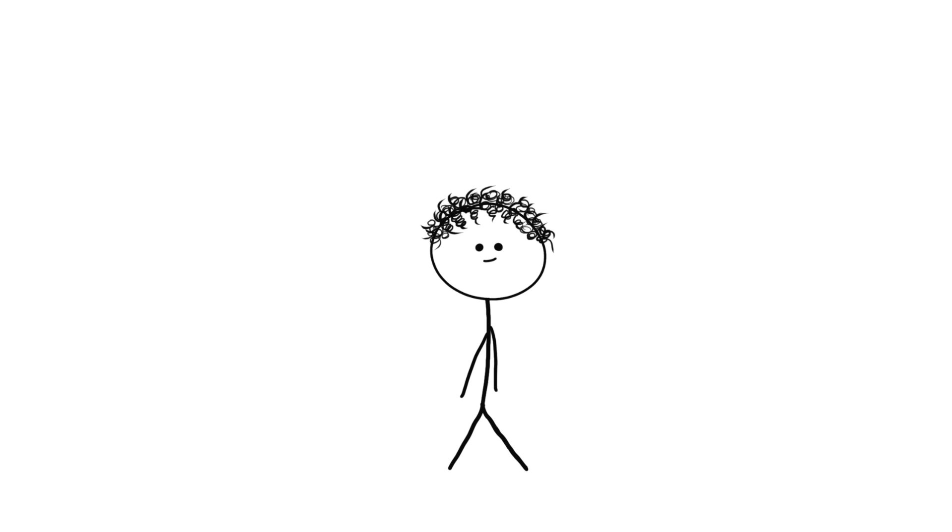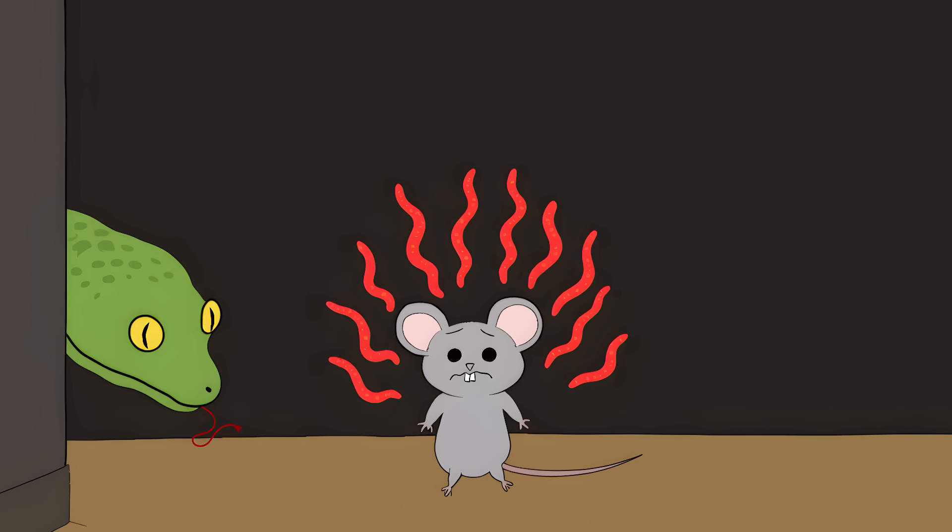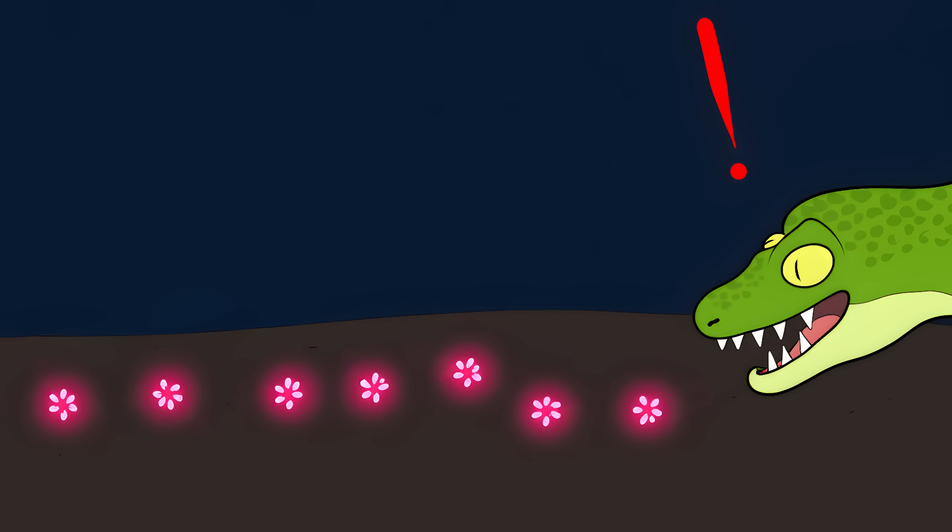Even if you're perfectly still, your body is constantly giving off heat that warms up the air around you. To the snake, it's like you're leaving a glowing trail of breadcrumbs everywhere you go.